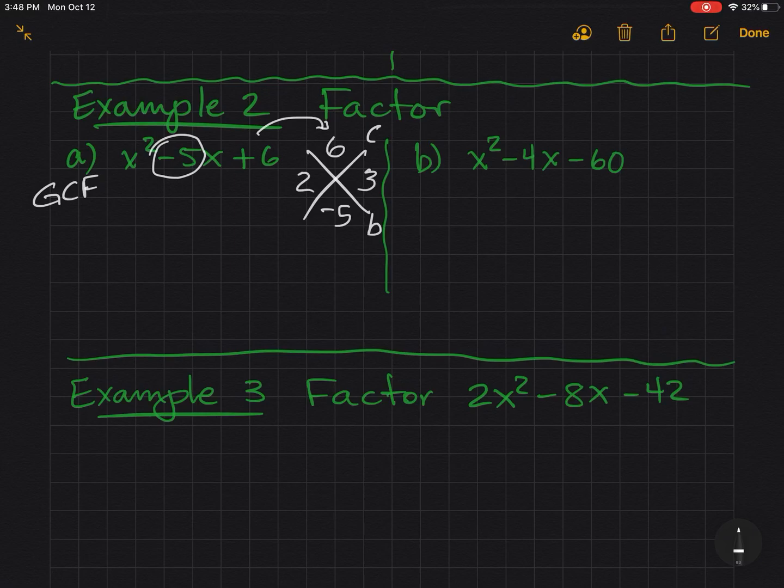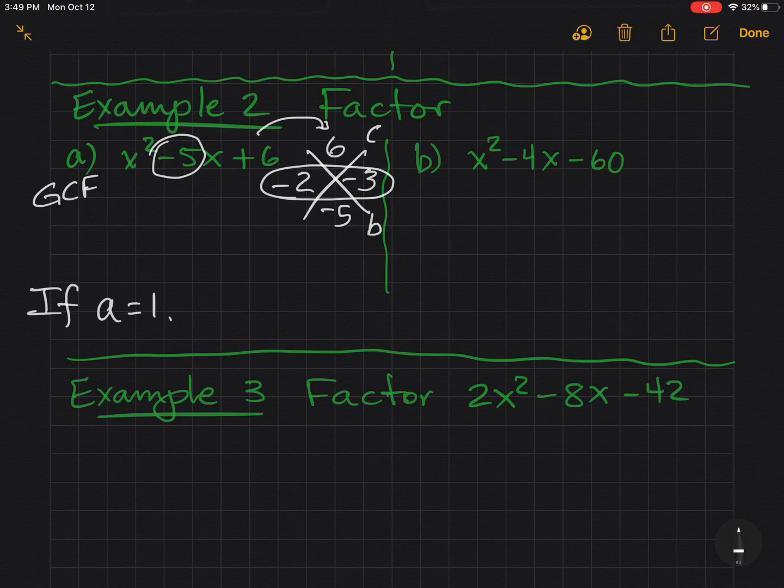I usually try a couple numbers and then play with the signs. 2 times 3 is 6, but I need some negative signs. If I make them both negative, they still multiply to positive 6, but now they add up. Once you figure out that diamond, if, and this is a big if, if A equals 1, then you're done.